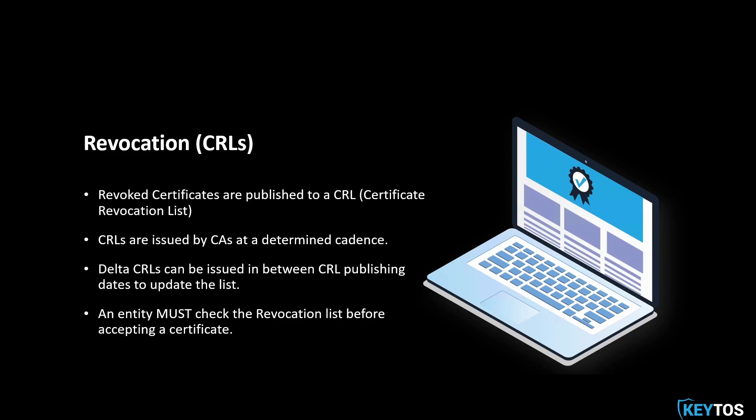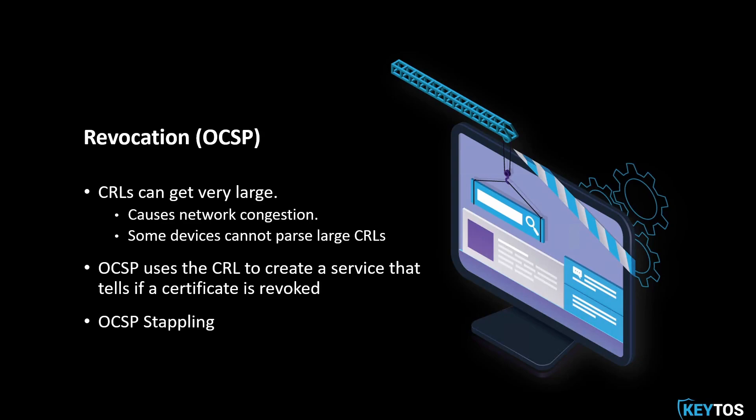But with IoT devices, routers, and everything now using certificates, there's another way you could handle this. Basically, OCSP — what it does is it's a server that reads the certificate revocation list and acts as a yes/no server.